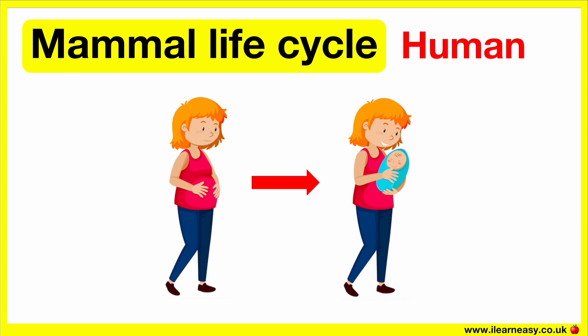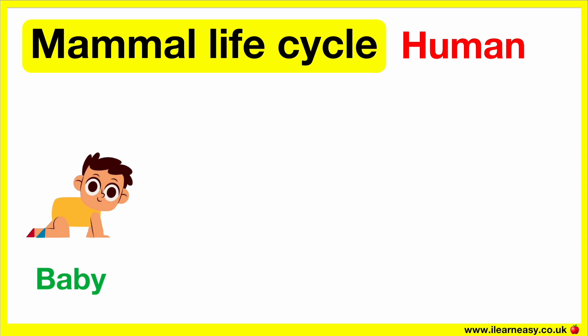The baby born is very small in size but has similar characteristics and features to their adult parents. The baby is dependent on its adult parents to look after it. During this time, the baby feeds on the milk from its mother and learns many skills such as moving, picking up things, walking, etc. Over time, the baby stops feeding on the milk and transitions to eat solid food.